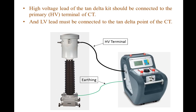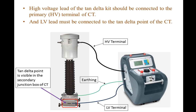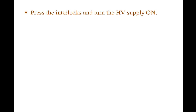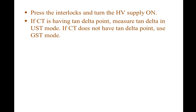The high voltage lead of the tan delta kit should be connected to the primary terminal of the CT, and the low voltage lead must be connected to the tan delta point of the CT. The tan delta point is visible in the secondary junction box of the CT. If the CT has a tan delta point, measure tan delta in UST mode. If the CT does not have a tan delta point, use GST mode.